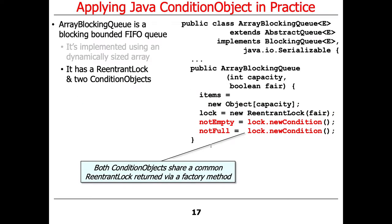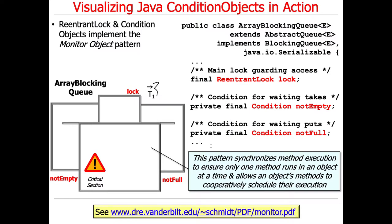Now let's delve into the details. We're going to visualize this using a monitor object notation diagram. The ReentrantLock and the two condition objects are used to implement the monitor object pattern, which as part of it uses the guarded suspension pattern. The monitor object pattern synchronizes method execution to ensure only one method at a time runs in an object's critical section, and it allows the object's methods to cooperatively schedule their execution.